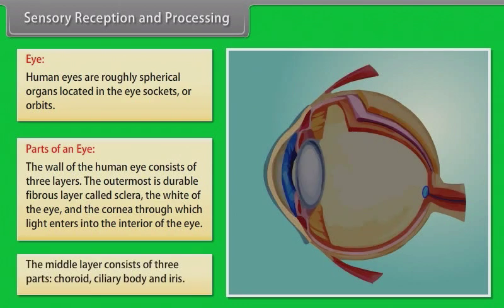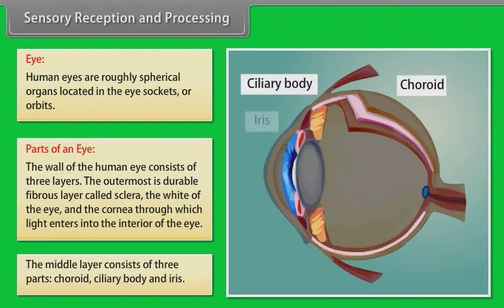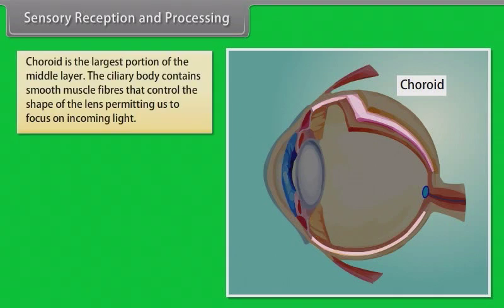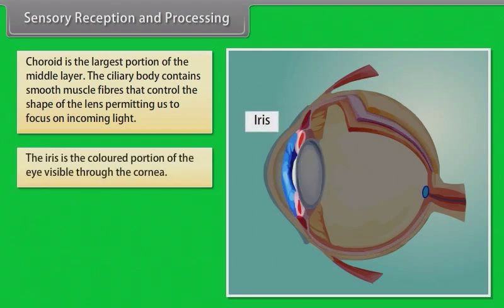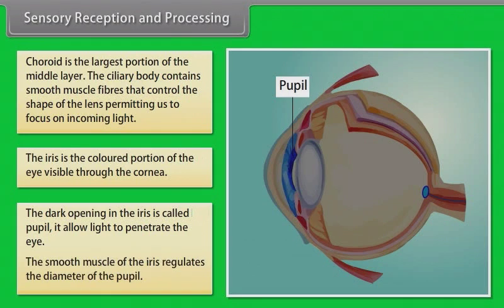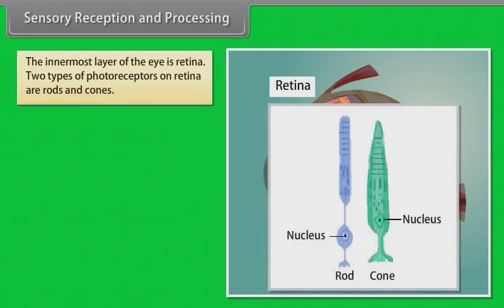The middle layer of the eye consists of three parts: the choroid, ciliary body, and iris. The choroid is the largest portion of the middle layer. The ciliary body contains smooth muscle fibers that control the shape of the lens, permitting us to focus on incoming light. The iris is the colored portion of the eye visible through the cornea, and the dark opening in the iris is called the pupil, which allows light to penetrate the eye.